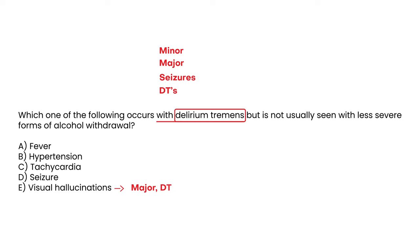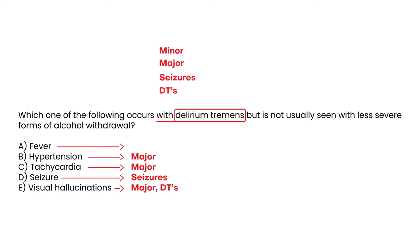Visual hallucinations can happen in the major stage and also in the DT stage. Seizures occur in the third stage. Tachycardia can happen in the major stage, and hypertension also happens in the major stage. However, fever — elevated temperature — is something you essentially have to wait until the patient is in full-blown delirium tremens to see. So the answer is A: fever.